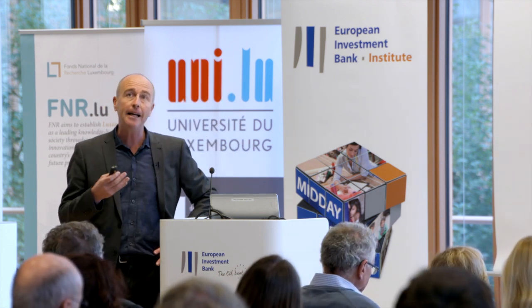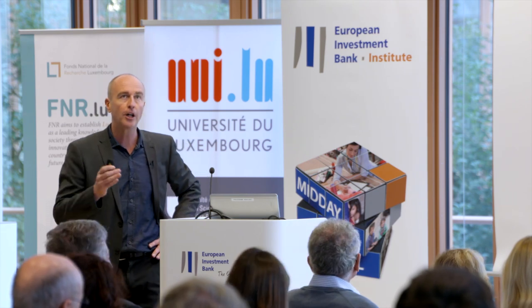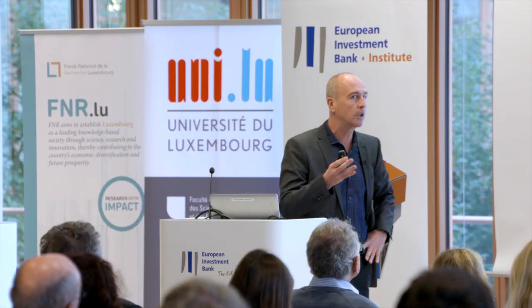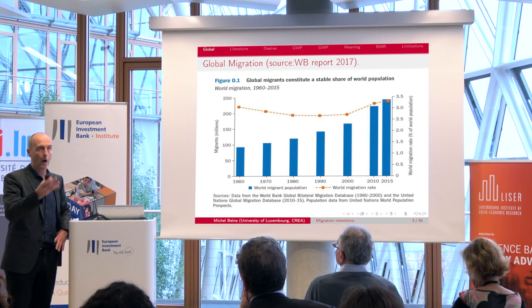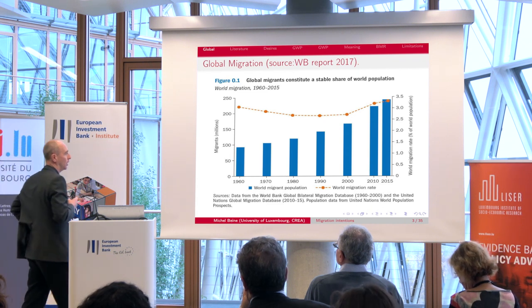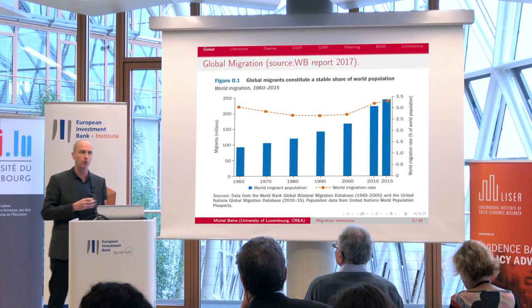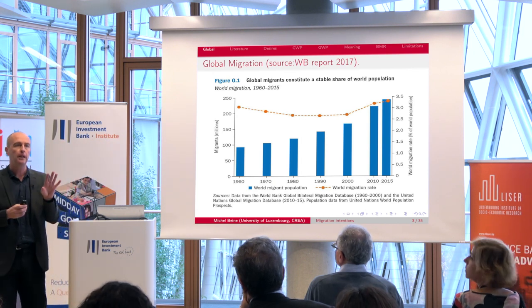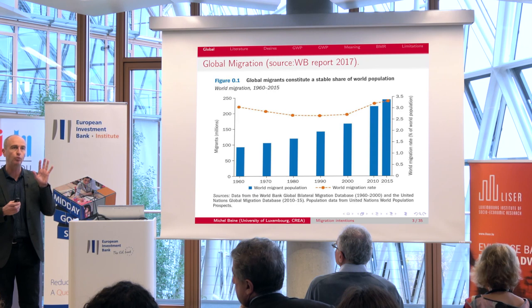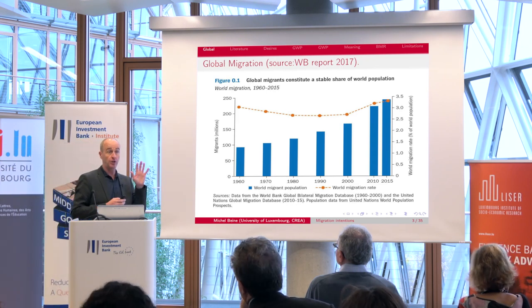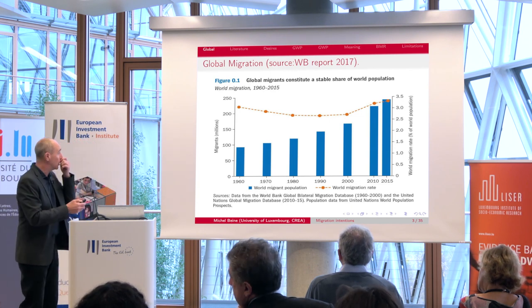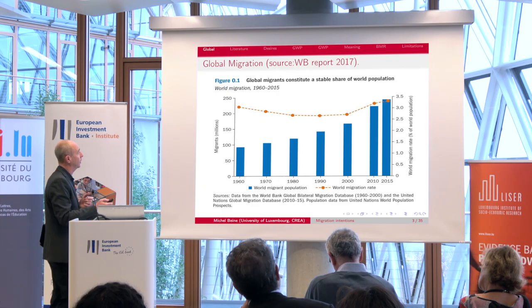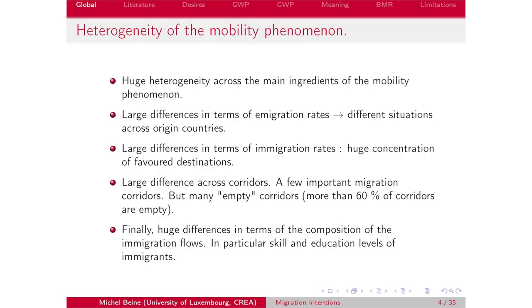I apologize in advance to those who have been working on international migration, as I'm going to present a very quick picture of the situation using actual data on migration flows. But my main point today is that I'm going to emphasize that we can make use of a new type of data — about migration aspirations — to explain this heterogeneity. There is a huge heterogeneity of international mobility of people across the main ingredients of the mobility phenomenon.